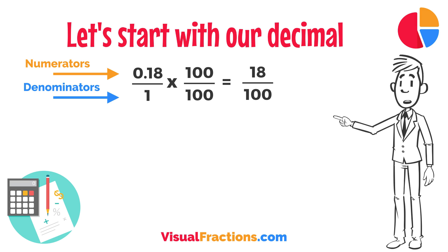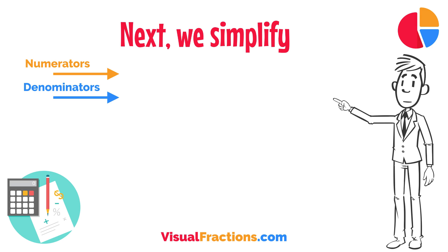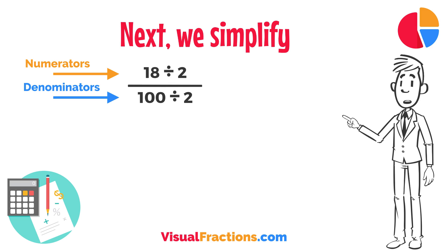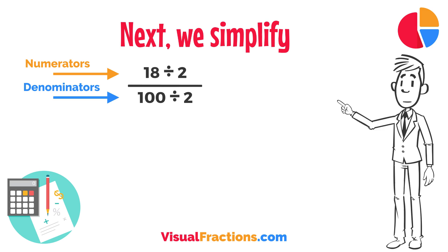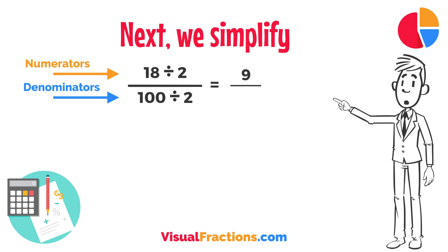Next, we simplify. Both the numerator and denominator in 18/100 are divisible by 2, the greatest common divisor. Divide 18 by 2 to get 9, and divide 100 by 2 to get 50.